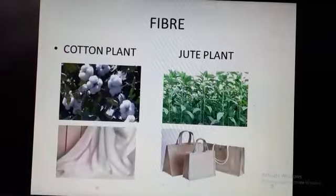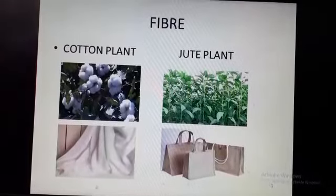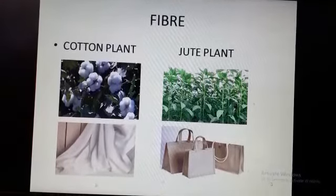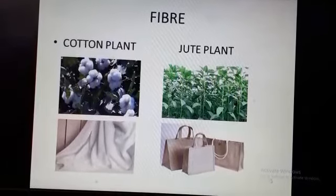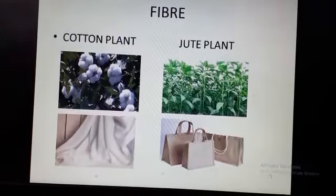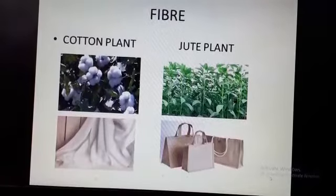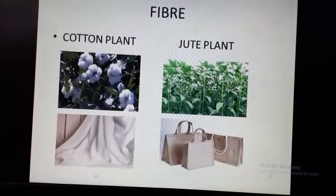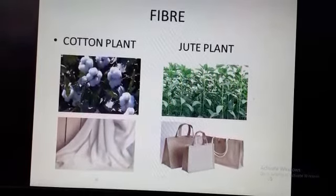The next category is fiber. We get clothes, threads, bags and other items made from cotton, and cotton is obtained from the cotton plant. The next one is jute; we get jute from the jute plant. Many things like bags, sacks, ropes and mats are made from jute.